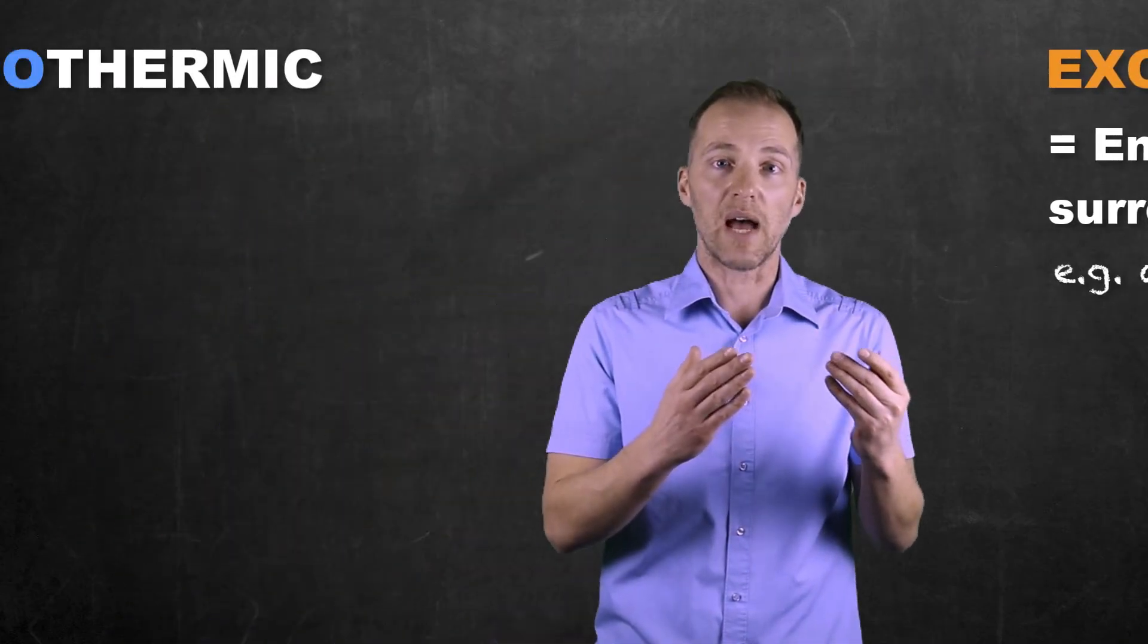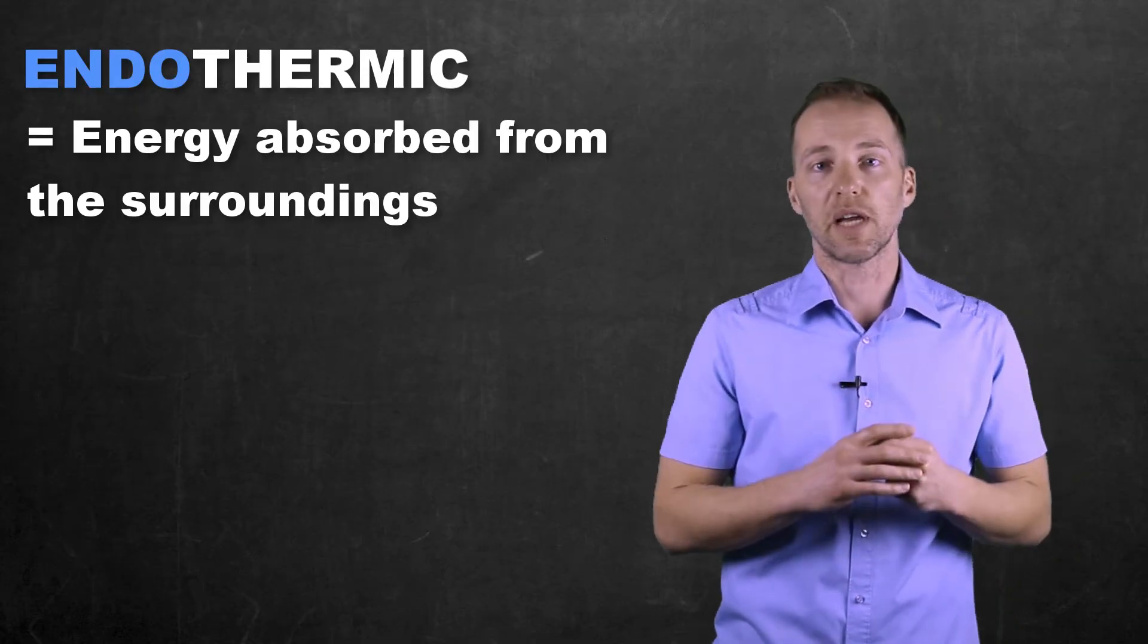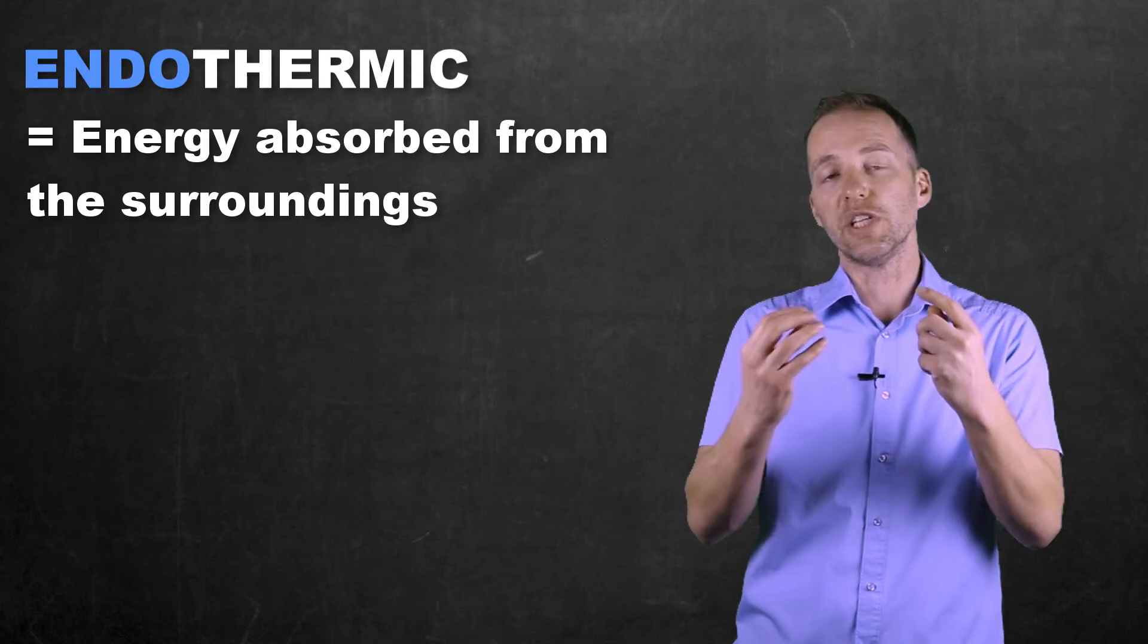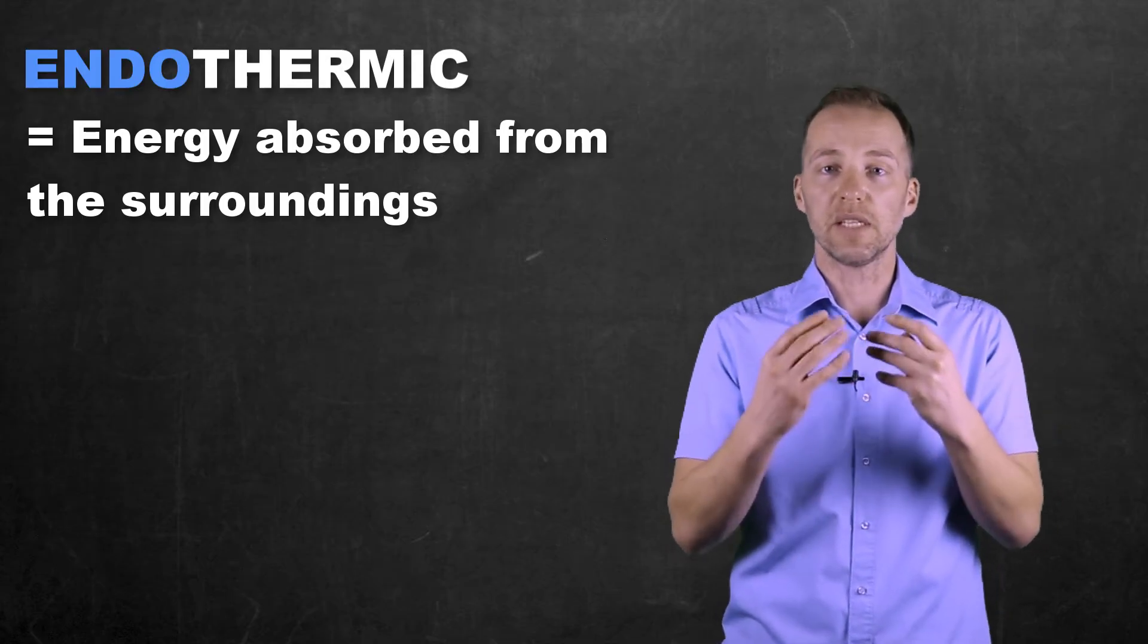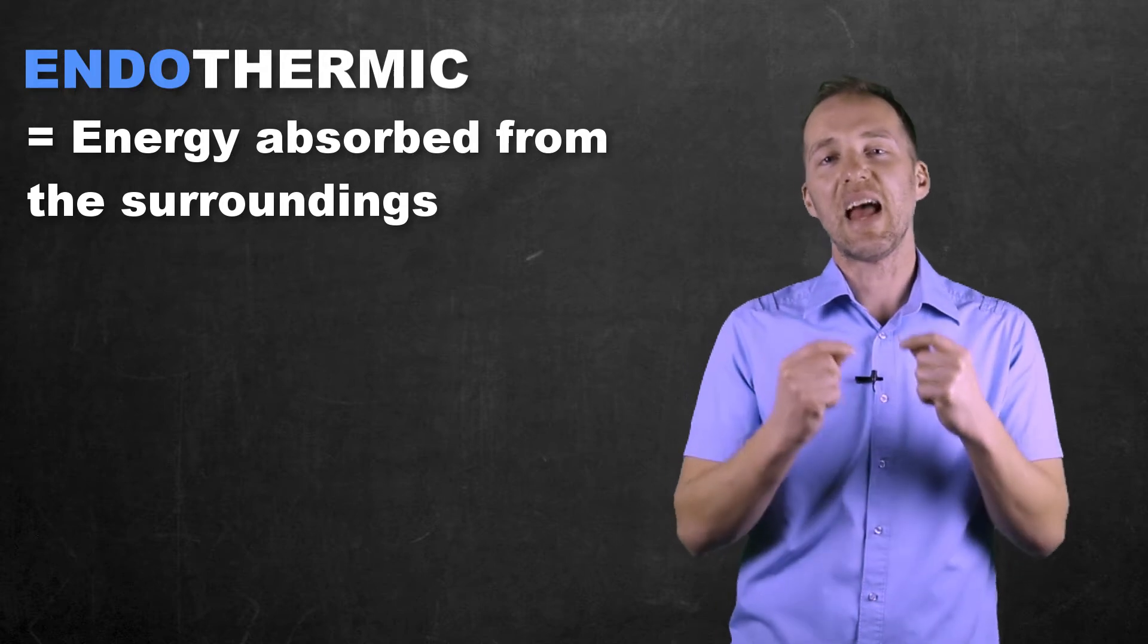But in the reverse process of that, let's say that there's a net energy being absorbed to that particular chemical system or that process. In that case, we have an overall energy input from the surroundings into that chemical reaction or that process, and we say that that is endothermic.